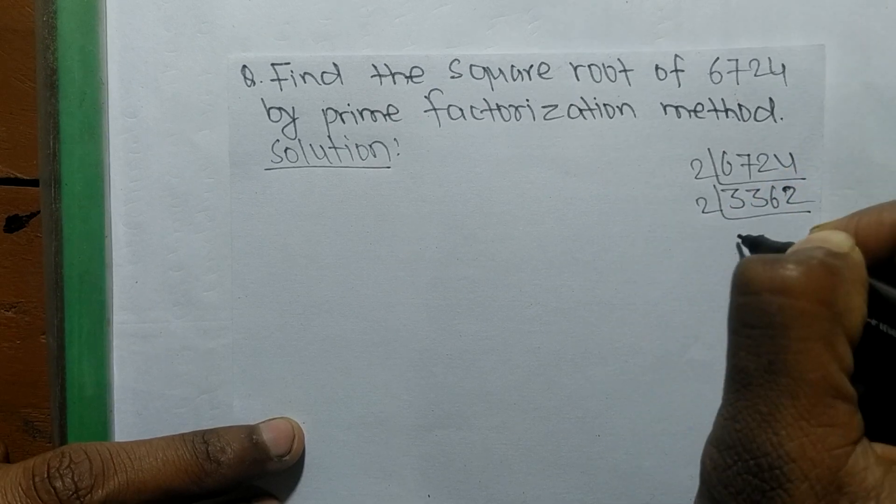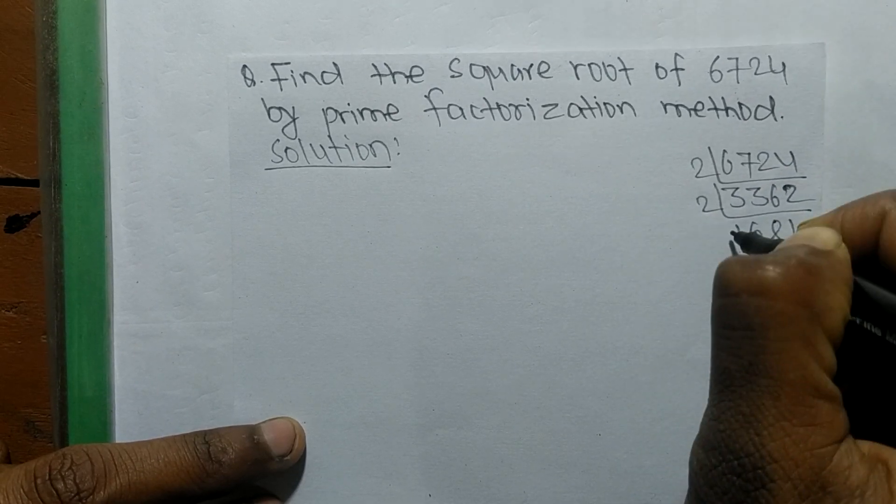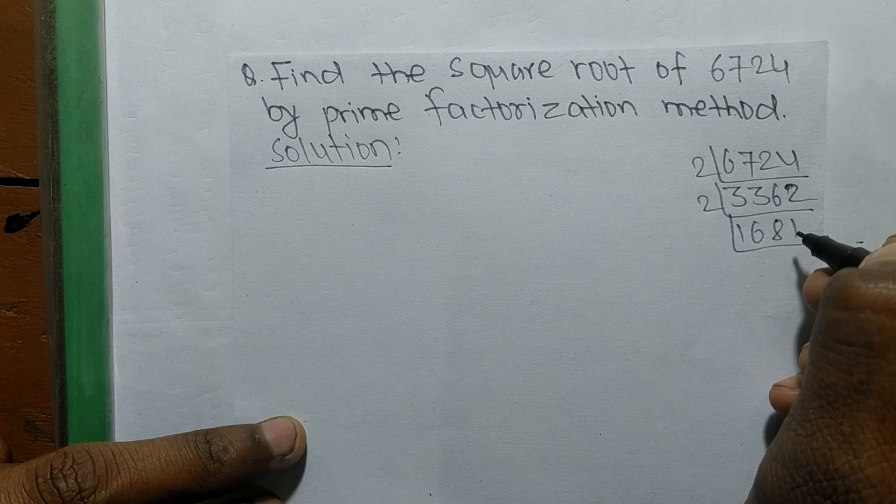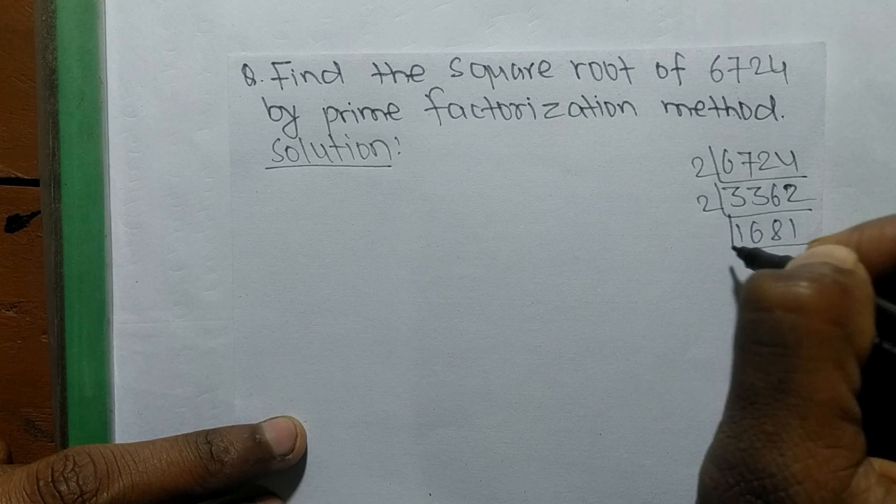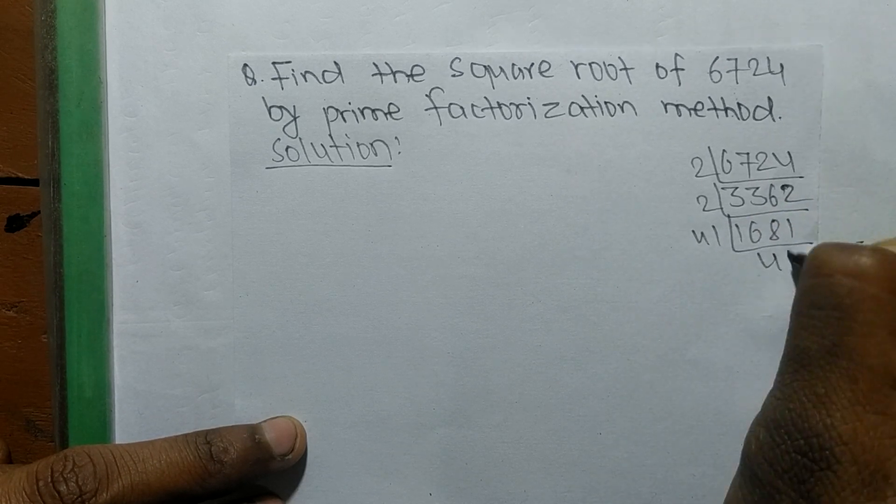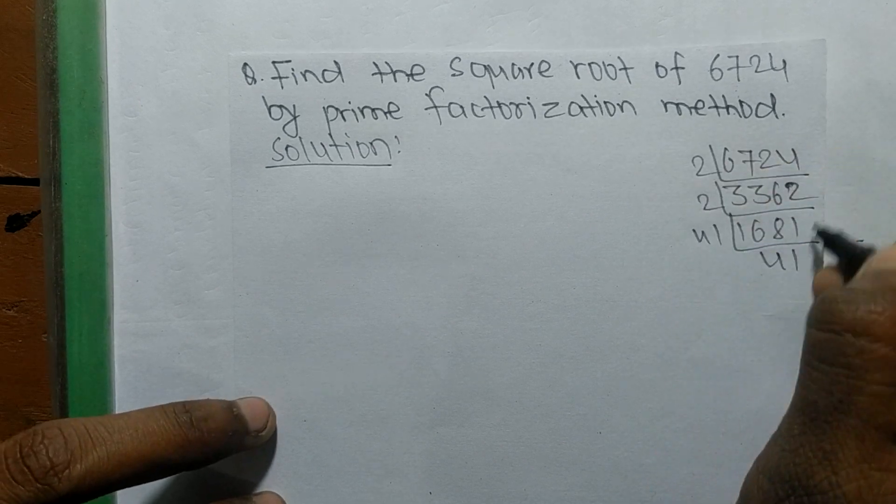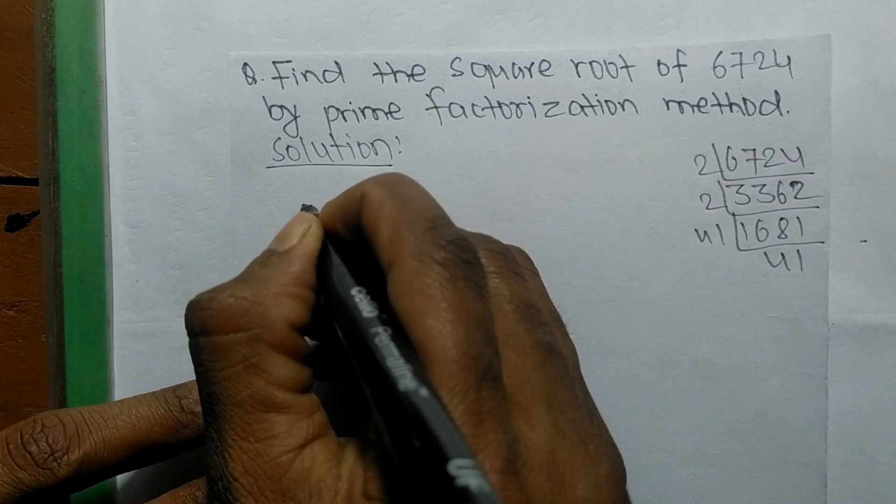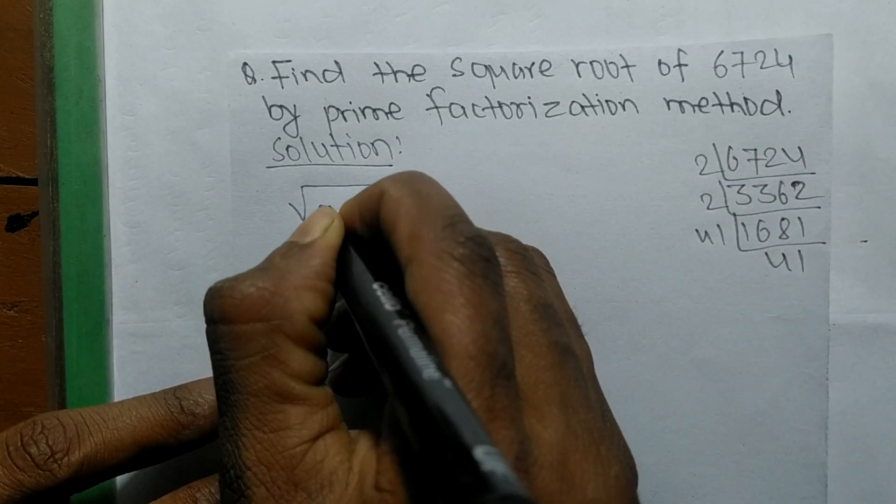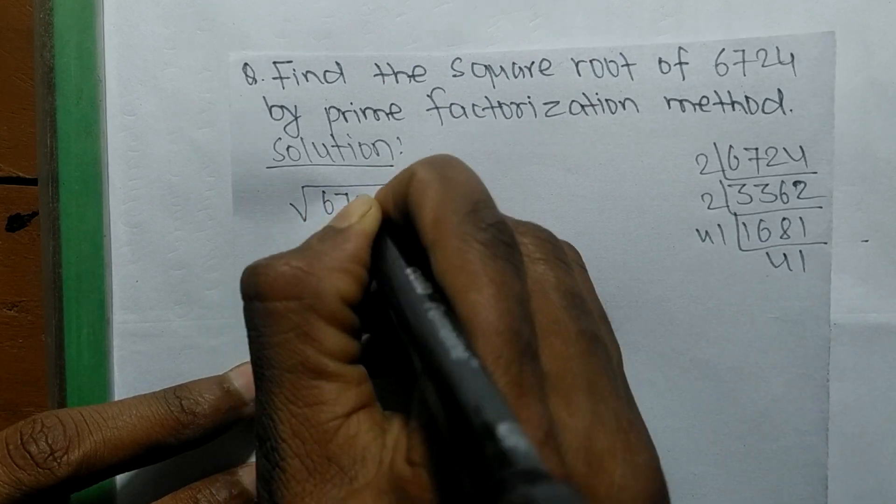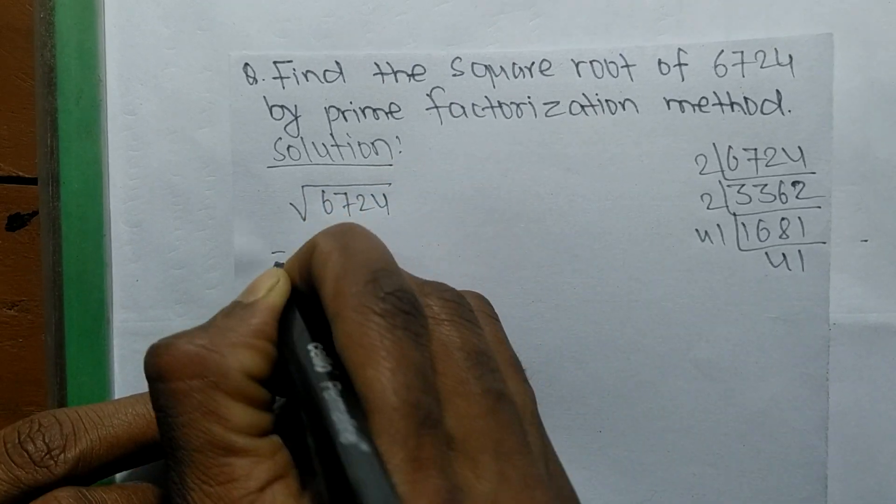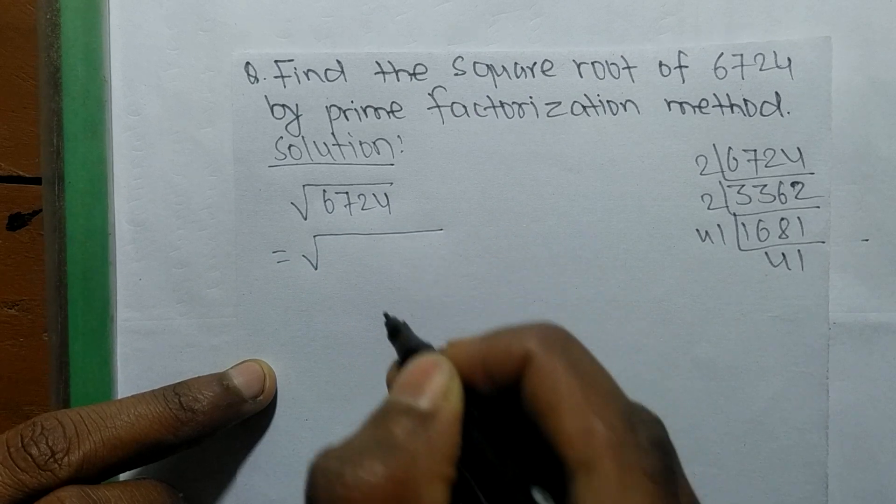2 times 1681. Again, it is exactly 41 times 41. After finding prime factors, now we find the square root.